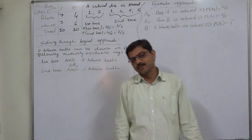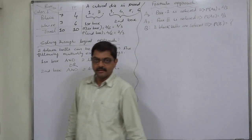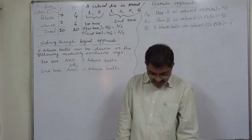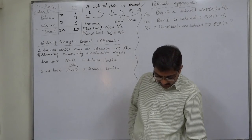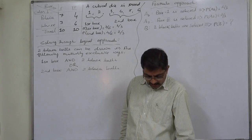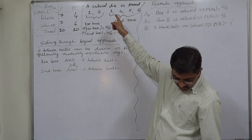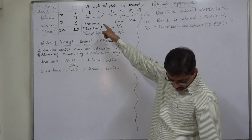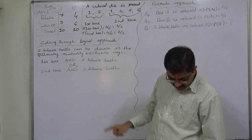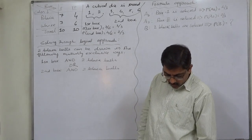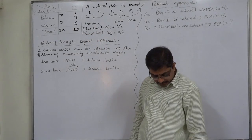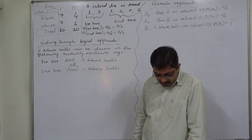Hello and welcome friends. New case of probability, somewhat advanced level. The problem is: there are 7 black and 3 white balls in one bag, while 4 black and 6 white balls are in another bag. A die is tossed — if it shows 1 or 2, two balls are drawn from the first bag; if 3, 4, 5, or 6 is shown, two balls are drawn from the second bag. If both balls drawn are black, find the probability that they came from the second bag.